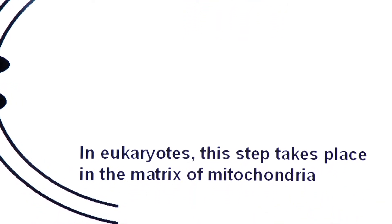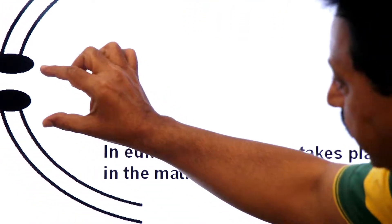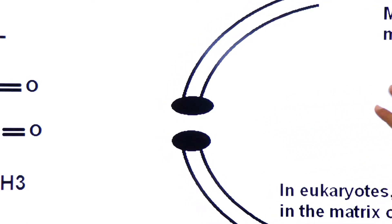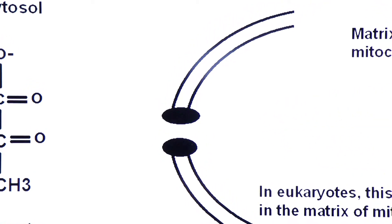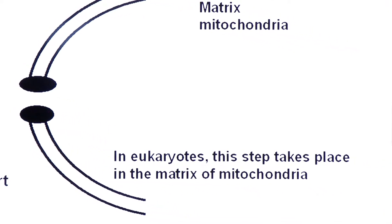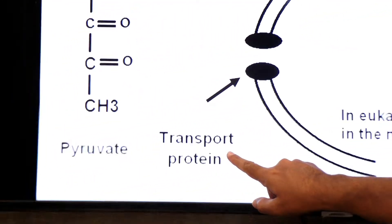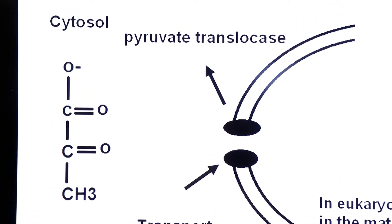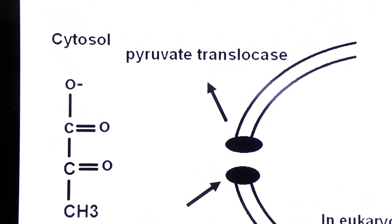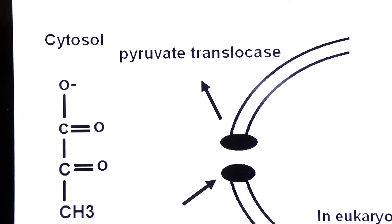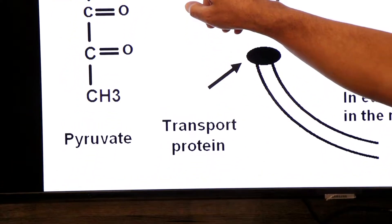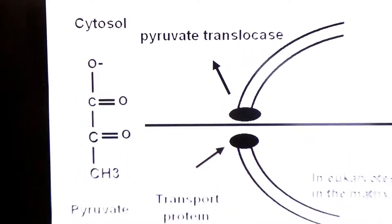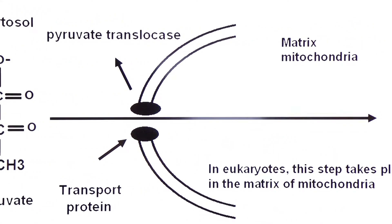This link state takes place in the matrix of mitochondria. Here you will see a transport protein — this transport protein is called pyruvate translocase. Through this transport protein, pyruvate will enter into the mitochondria matrix.